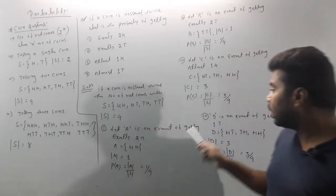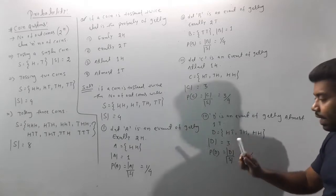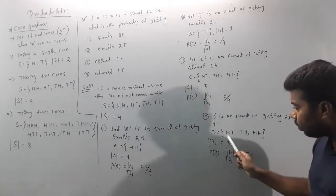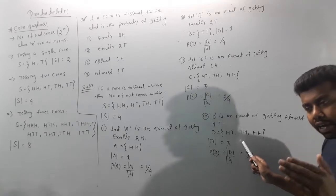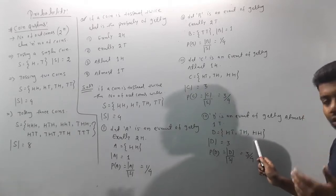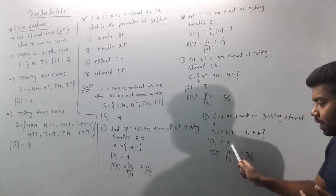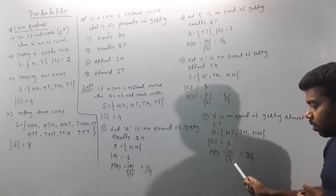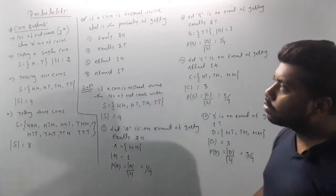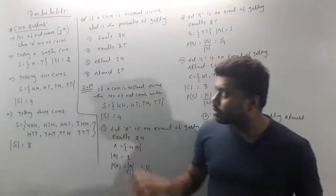Last question: Let D be the event of getting at most one tail. At most one tail means 0 tails or 1 tail — so D = {HH, HT, TH}, |D| = 3. Therefore P(D) = |D|/|S| = 3/4. I hope students understand the coin question. Pause the video and note it down.